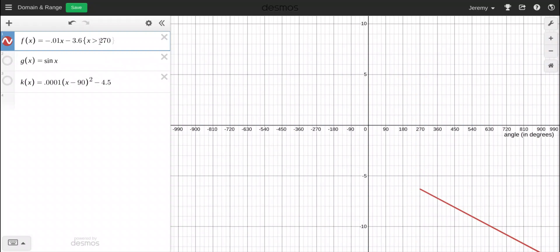If I flip, if I change this to less than 270, what do you think is gonna happen? Yep, only goes there.